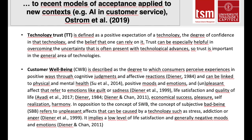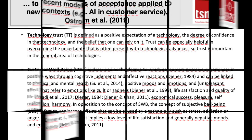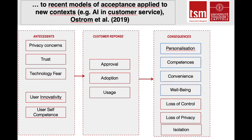In the model from Ostrom and colleagues, applied to the context of artificial intelligence in the consumer service sector, privacy concerns and technology fear impact trust negatively, while trust impacts customer response — namely approval, adoption, and usage — positively. If the customer experiences positive usage, personalization, competence, convenience, and well-being are created. On the other hand, if usage is perceived negatively, customers experience loss of control, loss of privacy, and even isolation.